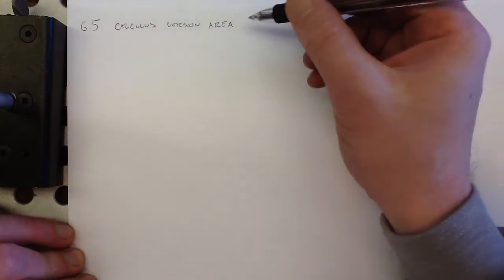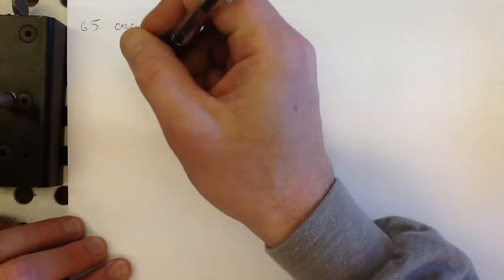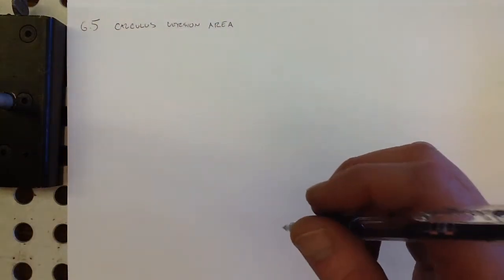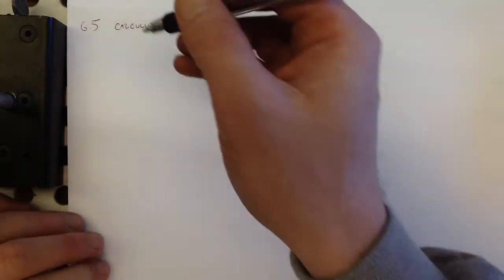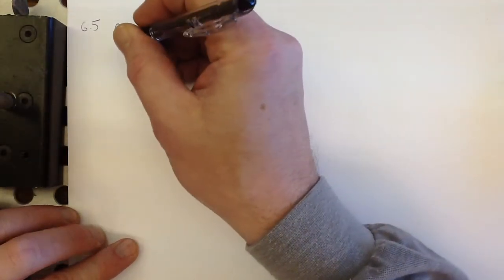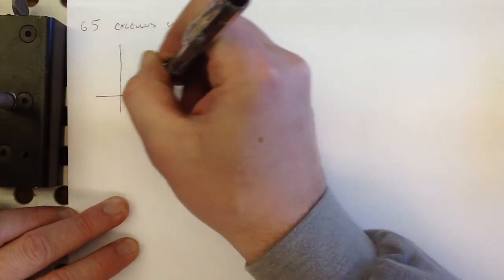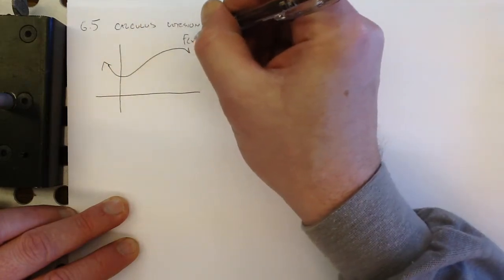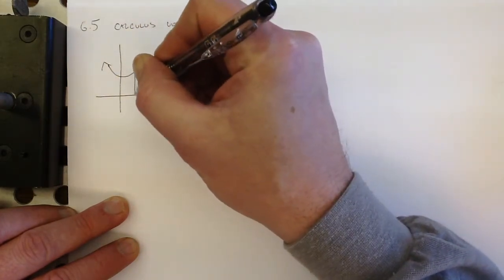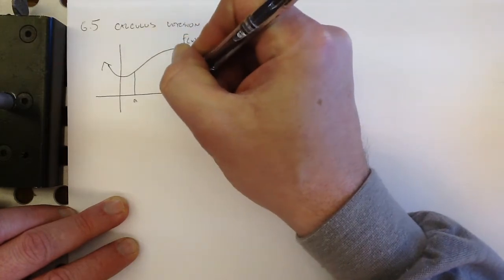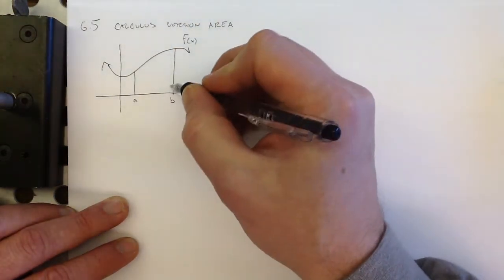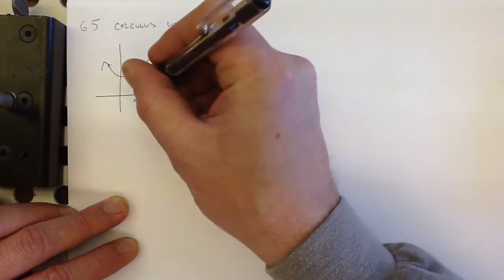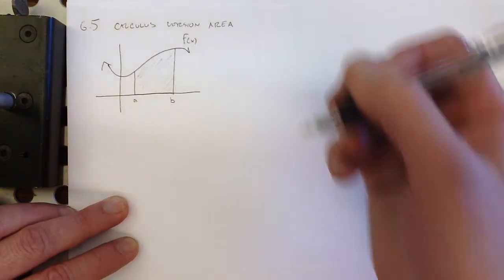So what is the calculus version of area? You know area from geometry - how to find the area of a triangle, circle, squares, rectangles, and all sorts of other two-dimensional shapes. But now, in general, we might be interested in finding the area under some curve, f of x from a to b. We might be interested in saying, what's this area?